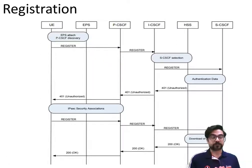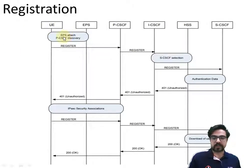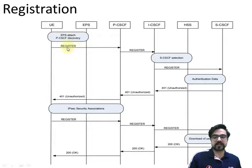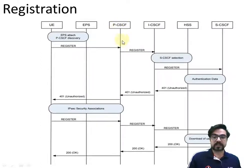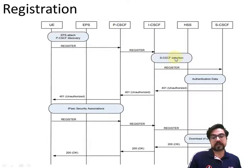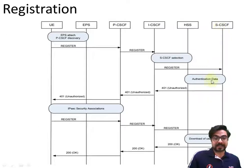Before making a phone call, we need to register. The UE is in an EPS attached state and is searching for a proxy. It sends a register request which goes directly to PCSCF. PCSCF, acting as a proxy, accepts and forwards the request to ICSCF. ICSCF decides on SCSCF selection and sends the request there.